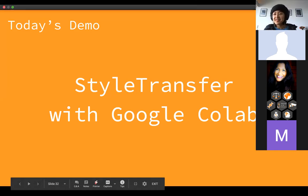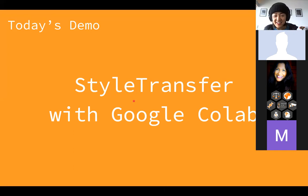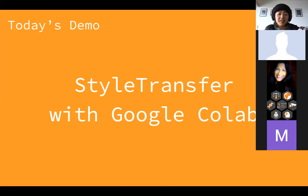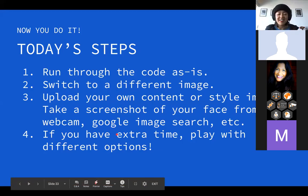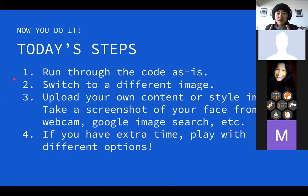That brings us to the interactive half of this workshop. We're going to do style transfer in this tool called Google Colab. Google Colab is a way for us to run code in our browsers — you can just open up Chrome, or Firefox, or Safari, and run machine learning code. It makes running machine learning code easy because you can run it from your browser and you don't need to set up something on your laptop or figure out whether you have a powerful enough GPU.